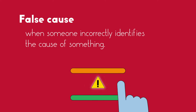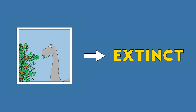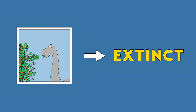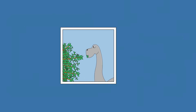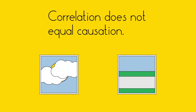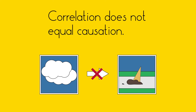One common logical fallacy is the false cause. This is when someone incorrectly identifies the cause of something. I stated that the dinosaurs became extinct because they ate vegetables. While these two separate things did happen, a diet of vegetables was not the cause of their extinction. Maybe you've heard false cause more commonly represented by the phrase 'correlation does not equal causation,' meaning that just because two things occurred around the same time, it doesn't mean that one caused the other.